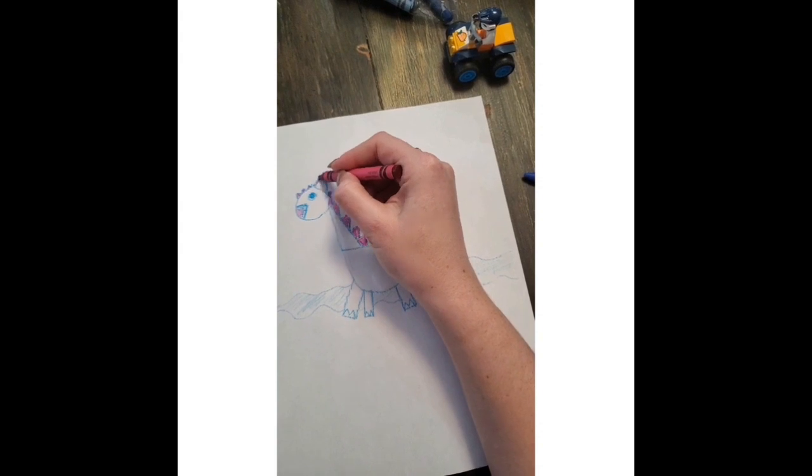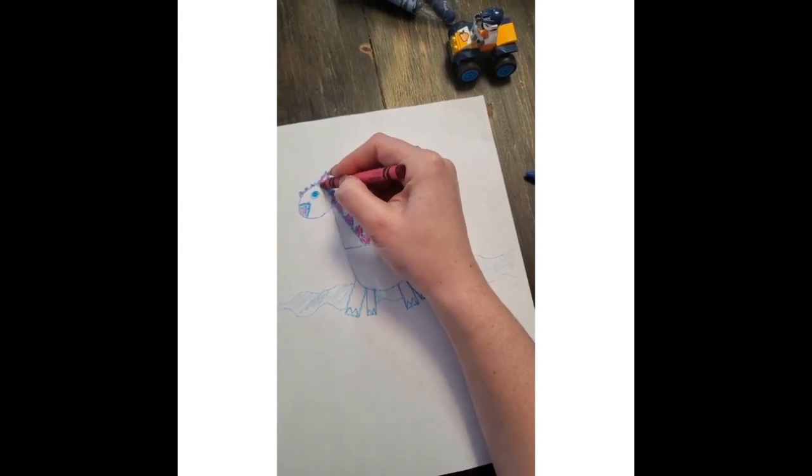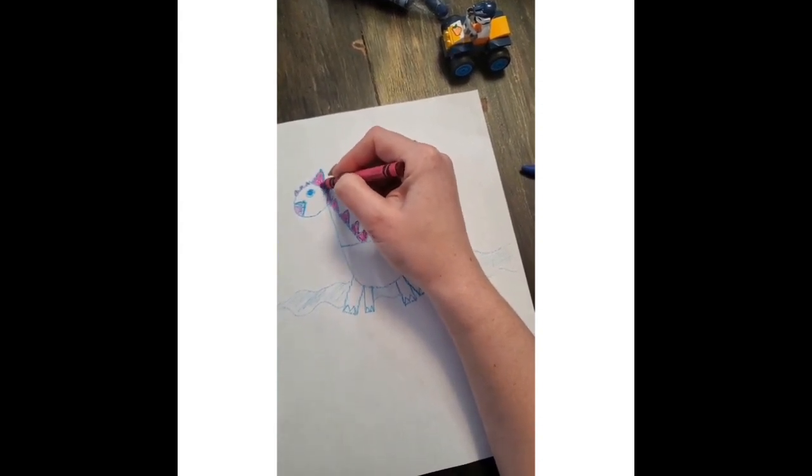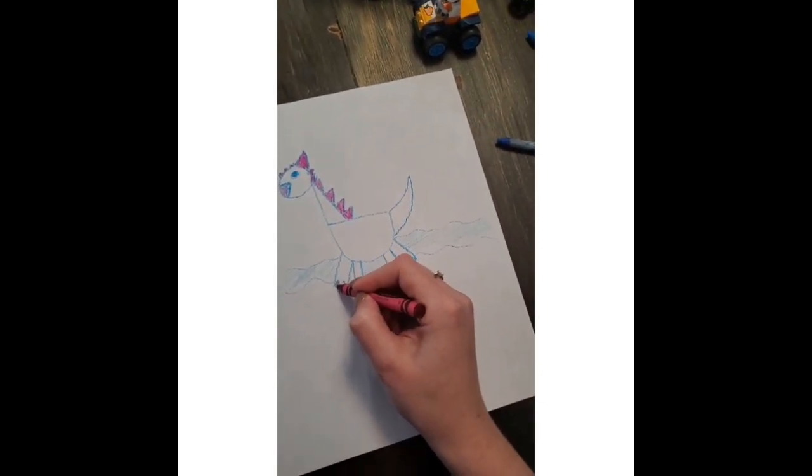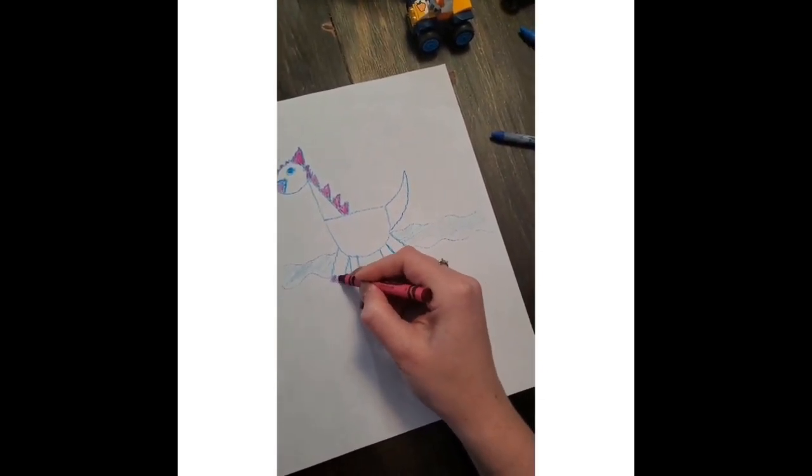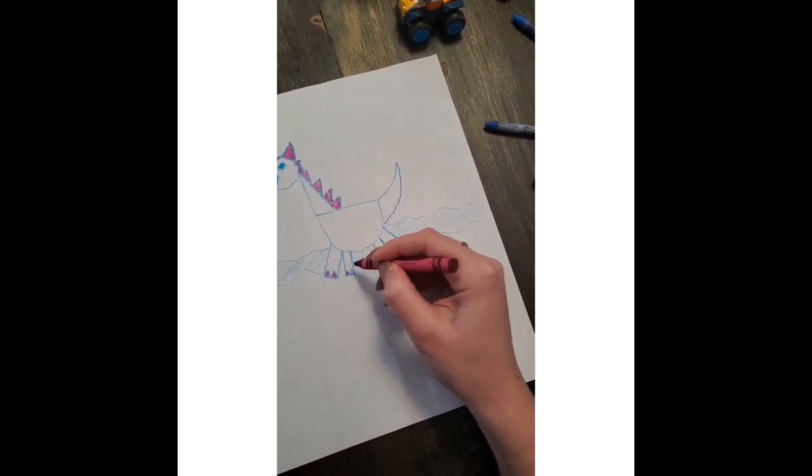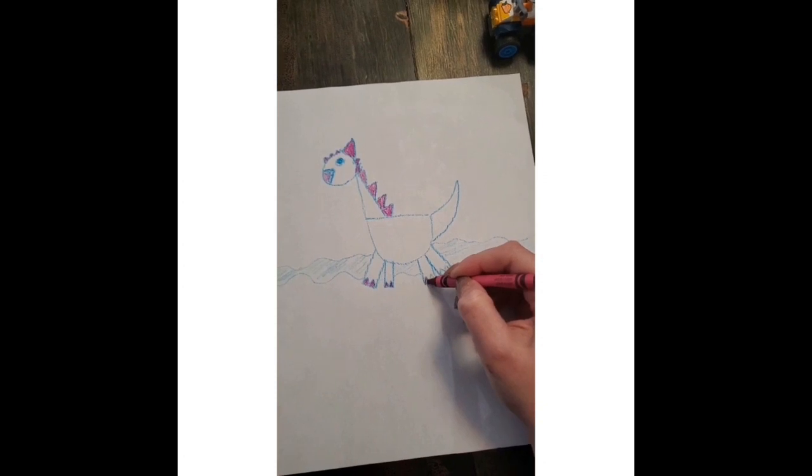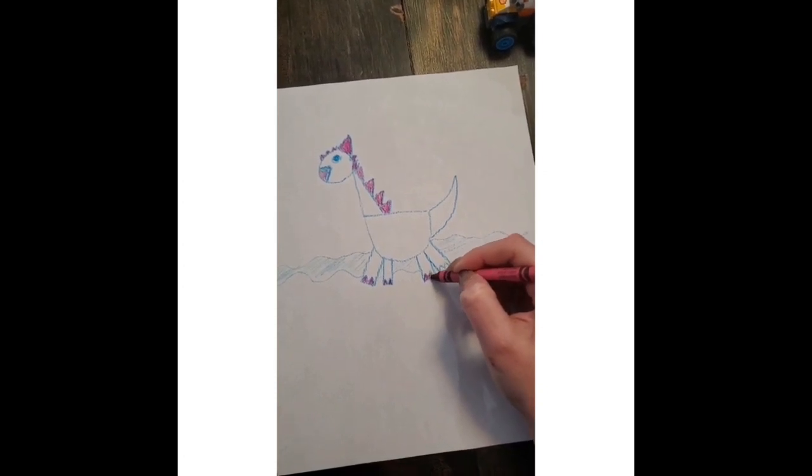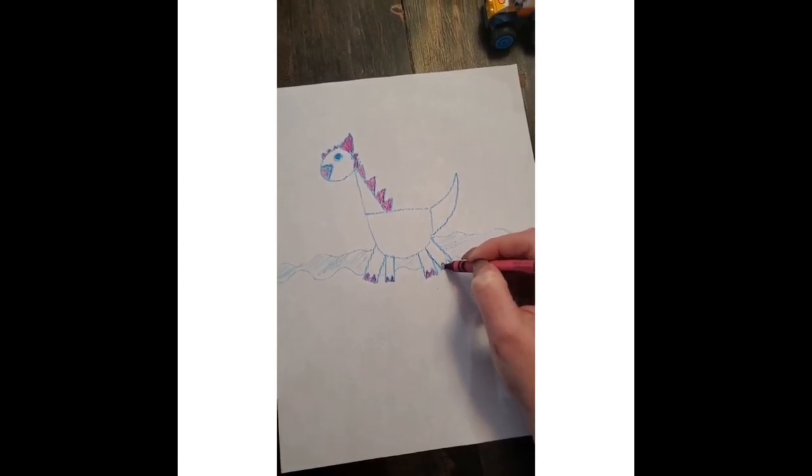There's a big spike here. I'm going to make mine like sunset. Maybe sunset. And I'm just coloring the claws the same color as the spikes. You can choose any color you want, any color.